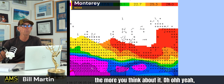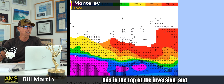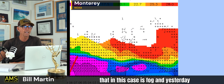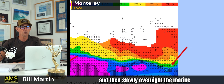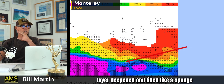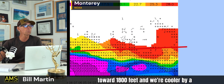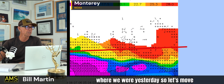The more you look at it, the more you think about it — you go, oh yeah, this is the top of the inversion. And then this is down below the inversion — all this area in here. And that, in this case, is fog. Yesterday, look how warm it was, how hot it was. And then slowly overnight the marine layer deepened and filled like a sponge toward 1,800 feet. And we're cooler by a good solid 10 degrees from where we were yesterday.